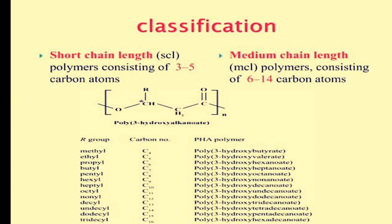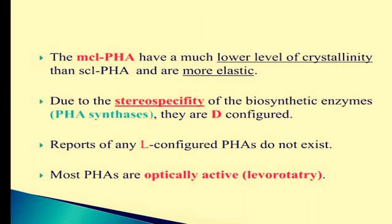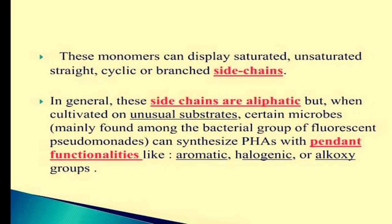The medium chain length polyhydroxyalkanoates have a much lower level of crystallinity than short chain length polymers. Due to the stereospecificity of the biosynthetic enzymes, i.e. PHA synthase, they are D-configured. Reports of any L-configured PHA do not exist. Most polyhydroxyalkanoates are optically active. These monomers can display saturated, unsaturated, straight, cyclic, or branched side chains. In general, these side chains are aliphatic, but when cultivated on unusual substrates, certain microbes — mainly found among the bacterial group of fluorescent pseudomonads — can synthesize PHA with pendant functionalities like aromatic, halogenic, or alkoxy groups.